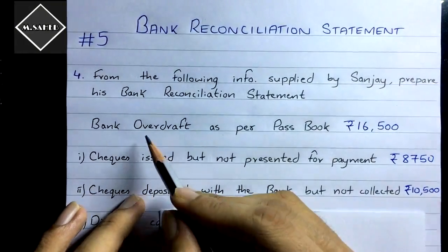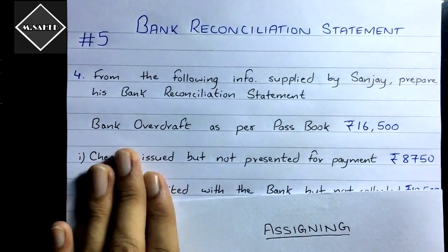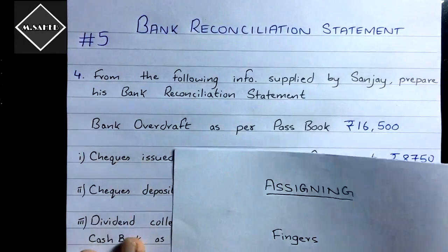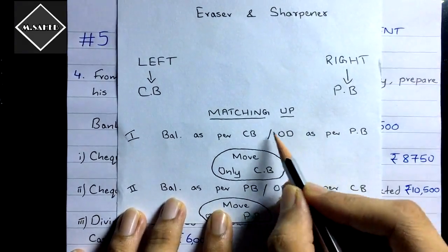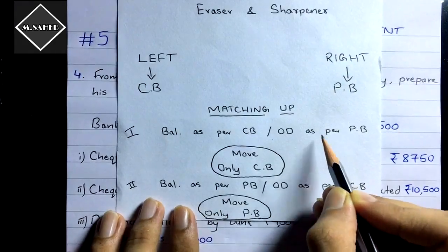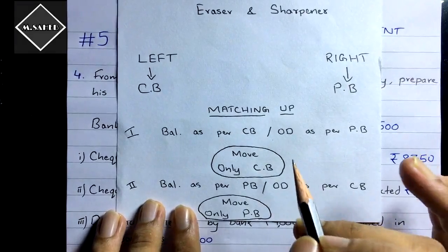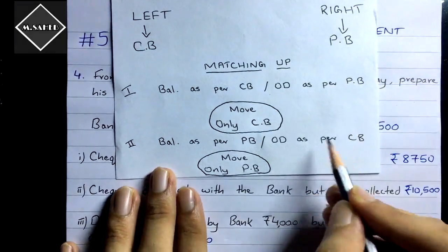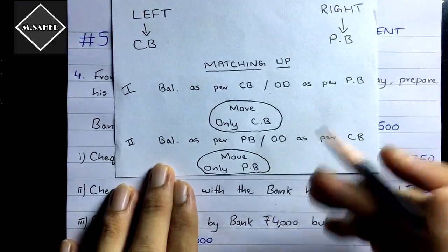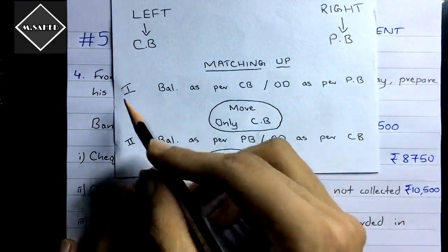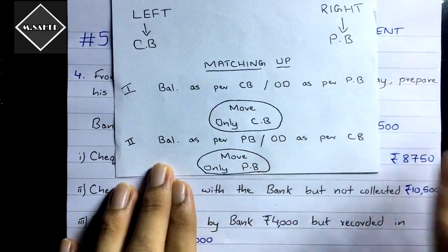Here in this question we have got unfavorable balance — overdraft as per passbook. To solve this problem, we make a simple assumption: if you have got overdraft as per passbook, then you assume you have got balance as per cashbook and solve accordingly. Conversely, if you have overdraft as per cashbook, you assume balance as per passbook. First scenario: move only the cashbook finger; second scenario: move only the passbook finger.